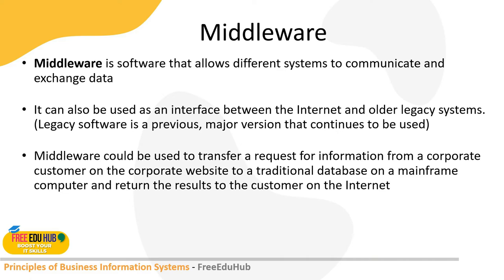Legacy systems are important in some organizations because the system may be working perfectly fine and the organization is heavily dependent on it. Sometimes you don't need to upgrade the operating system because upgrading it may cause legacy applications to stop working. As a rule of thumb, it's always recommended to get rid of any legacy applications so that in future any changes won't be bottlenecked by them. Middleware can be used to transfer requests from corporate customers through corporate websites to a traditional database or mainframe computer, returning results via the internet.